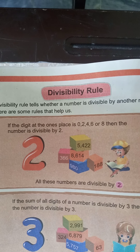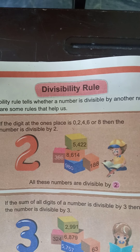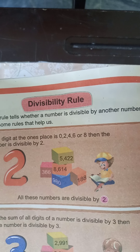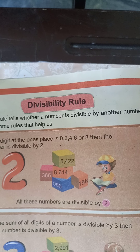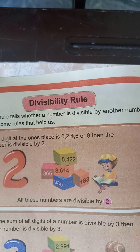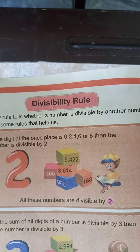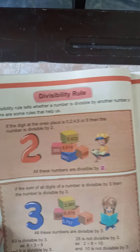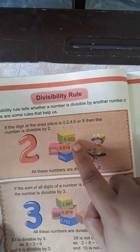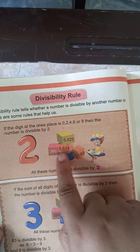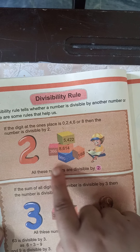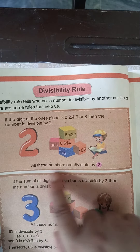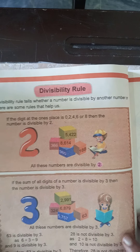Agar one's ke house mein aapke paas even number hai, then the whole number will be even. Dekhe, kuch boxes aapko given hai. The first box jo green color mein hai: five thousand four hundred twenty two. Yaha pe one's house number is two, it's mean ye even number hai. Isi tarah jitne bhi boxes hain, in sub mein even numbers given hain. All these numbers are divisible by two.